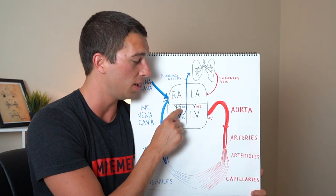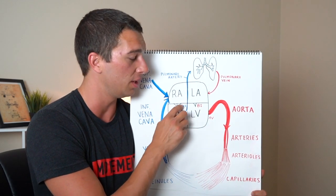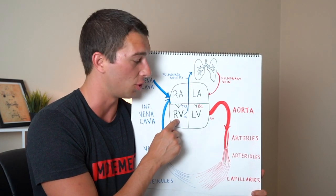So tricuspid valve is three on the right side, tri through the tricuspid valve and into the right ventricle.